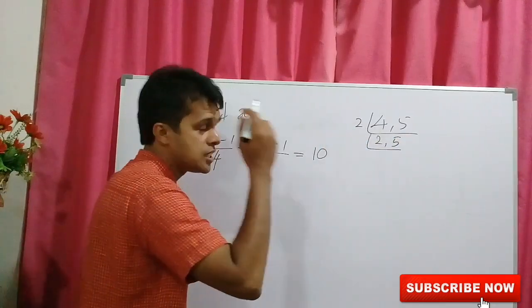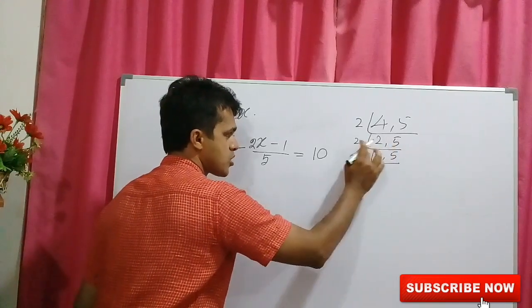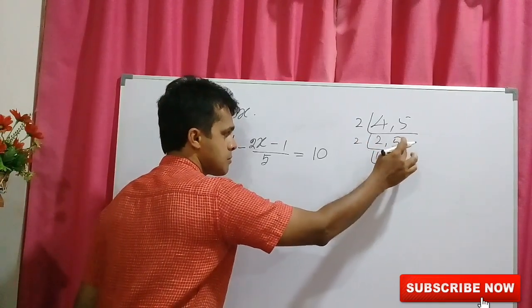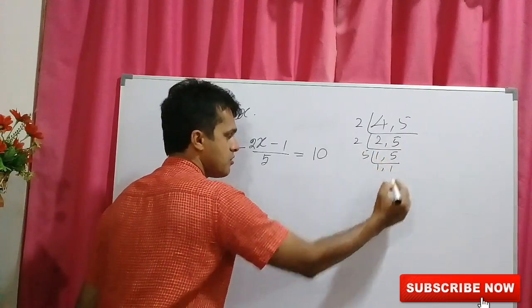Again divided by 2, 2 over 2, 1, here 5. 5 is not a multiple of 2, therefore it is written here, the digit 5. Again it is divided by 5, 1, 1.